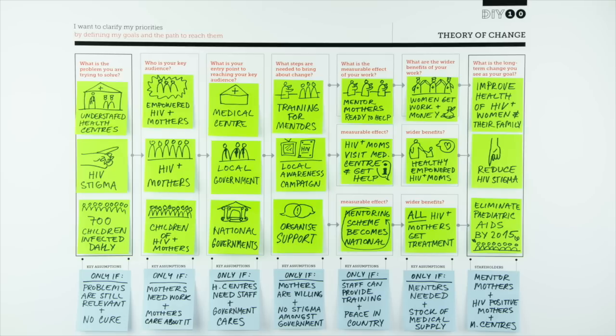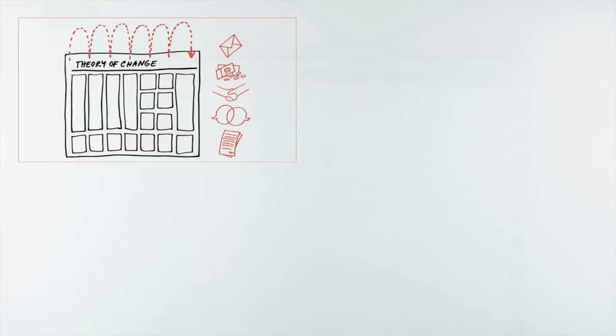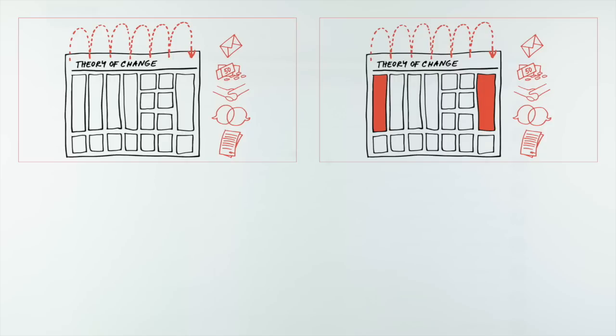The theory of change template helped Danielle map out the logical sequence of her initiative, from its inputs to its outcomes, all on one page.